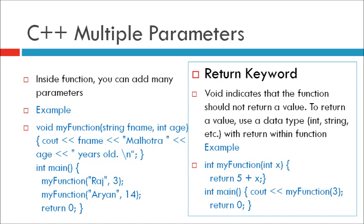Output of this program is 8, because 5 plus 3. In the body of this function, we have written 5 plus x and x value is 3. So 5 plus x, 5 plus 3 is equal to 8.